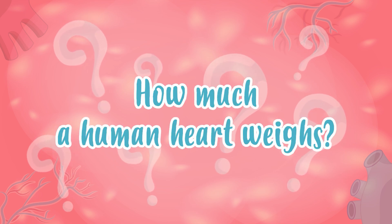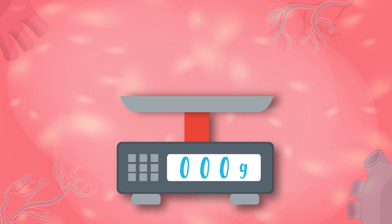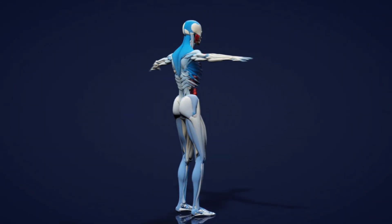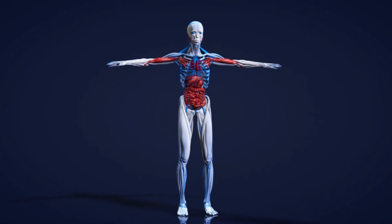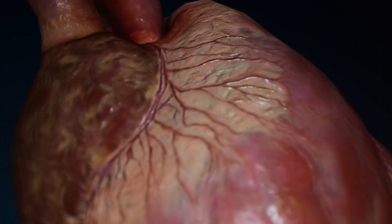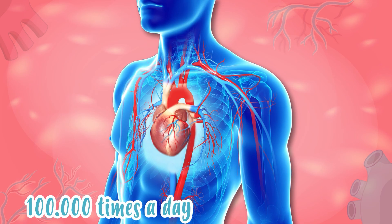Fun fact: do you know approximately how much a human heart weighs? It's 450 grams — almost half a kilo! The heart truly is the engine of our circulatory system and is an incredibly strong muscle. It's able to beat more than a hundred thousand times a day — so cool!